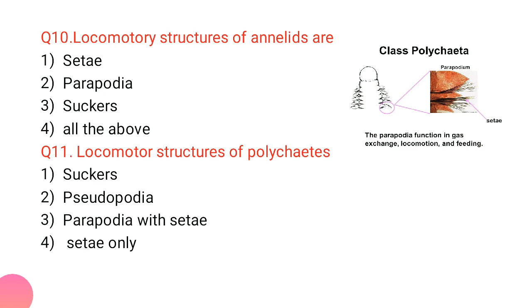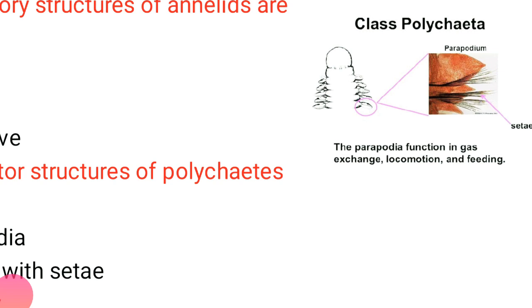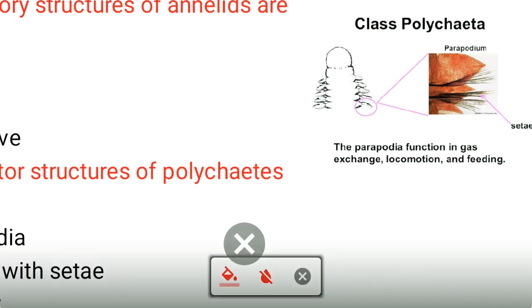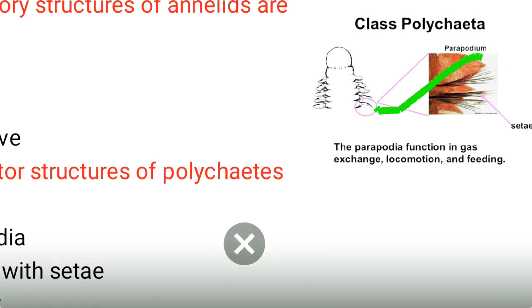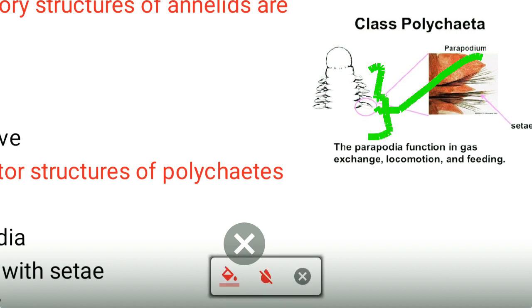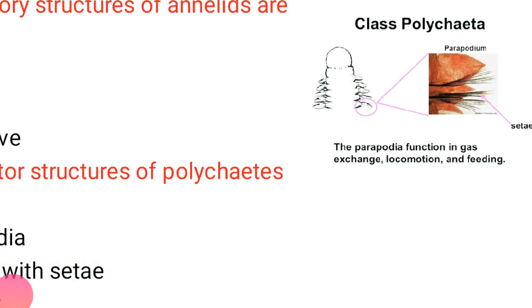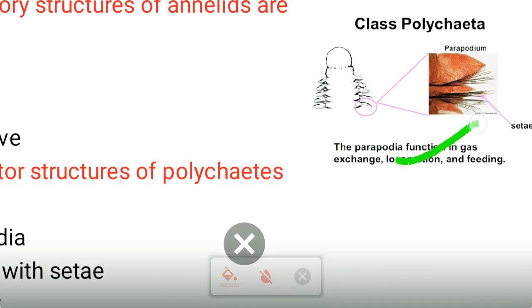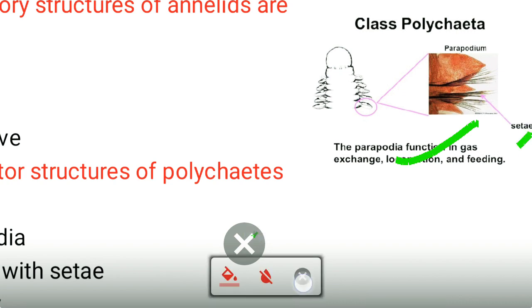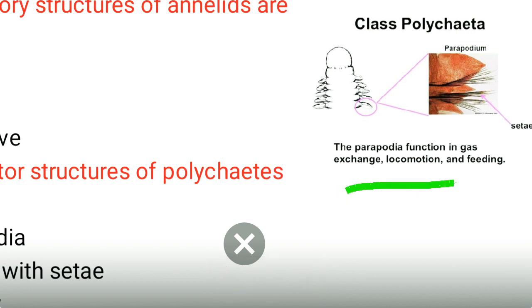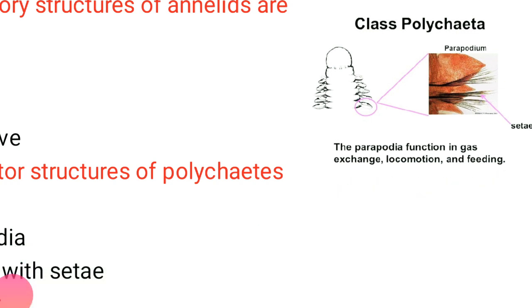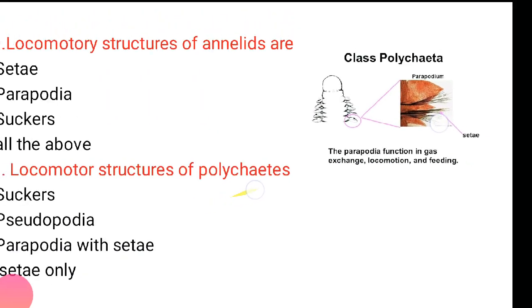The locomotory structures of Polychaeta — you can see in the diagram — are parapodia and setae. The parapodia not only function as a respiratory organ but also help in locomotion and feeding, since Polychaeta are aquatic forms.